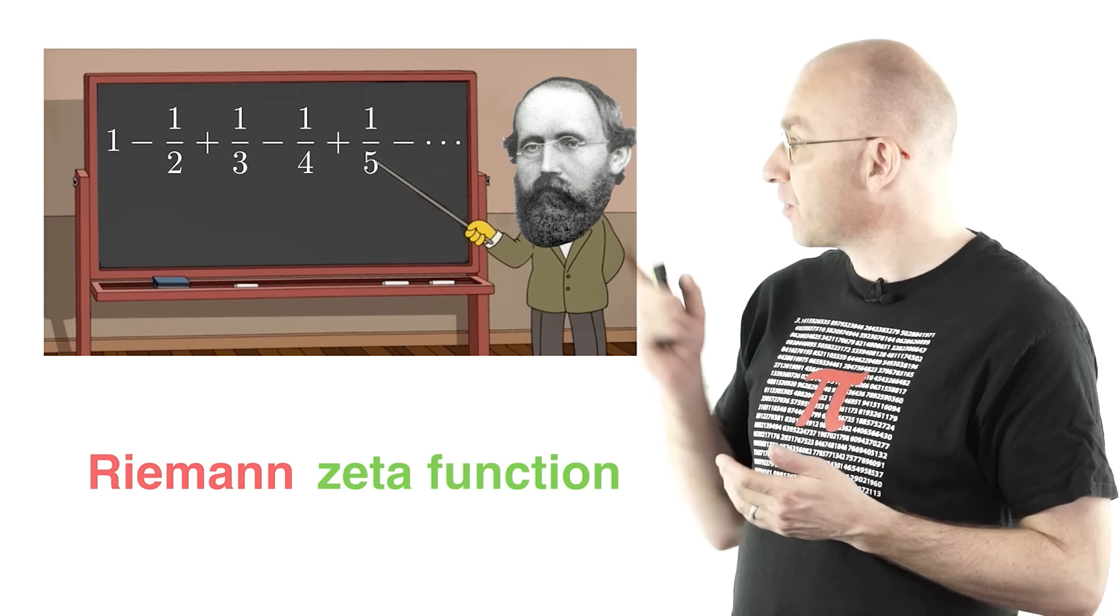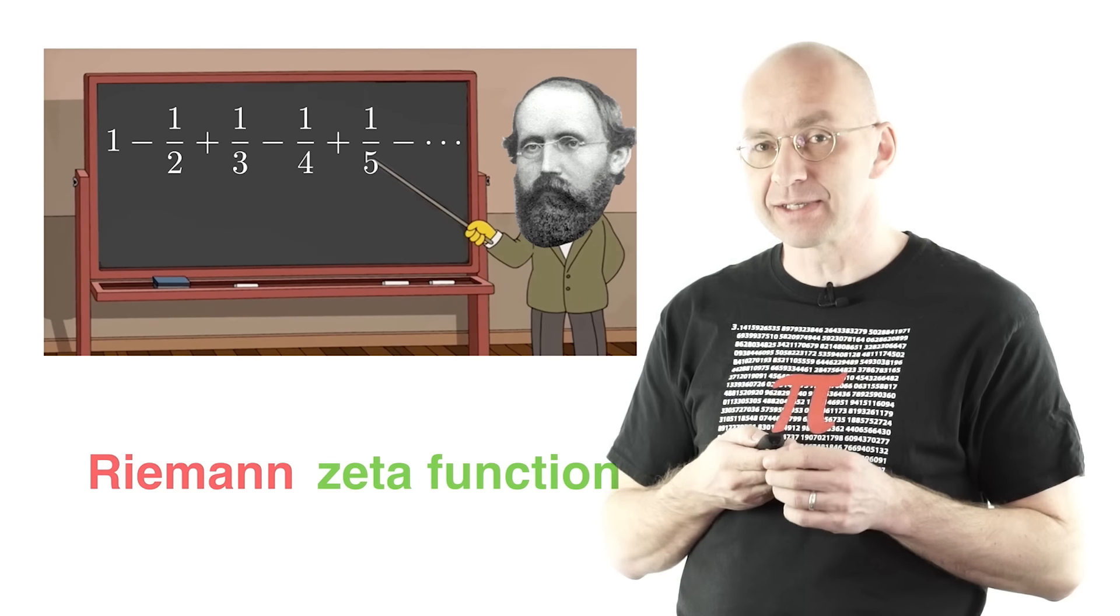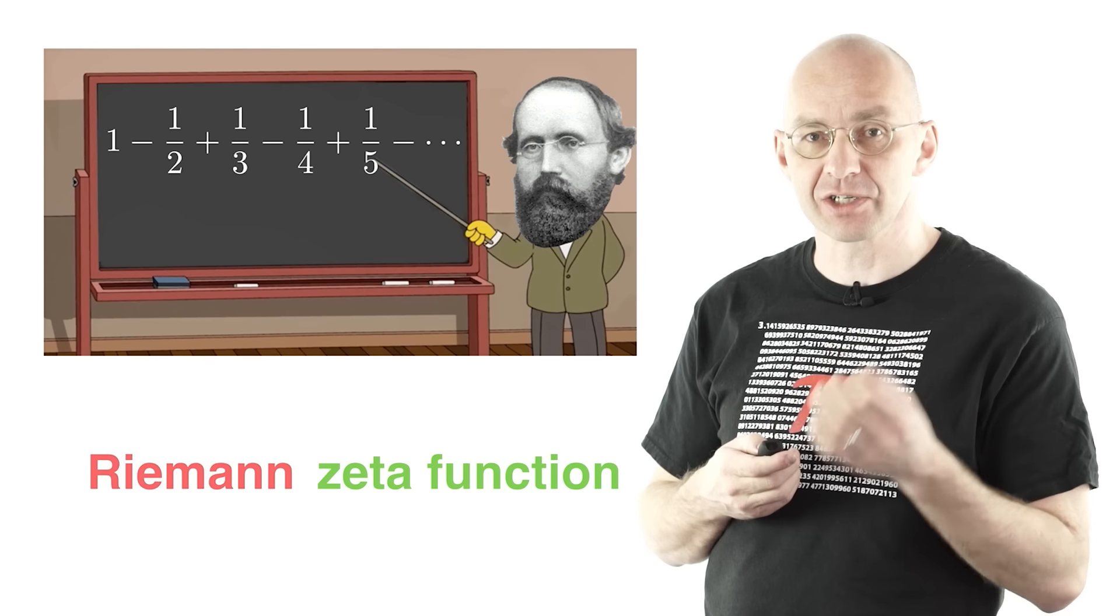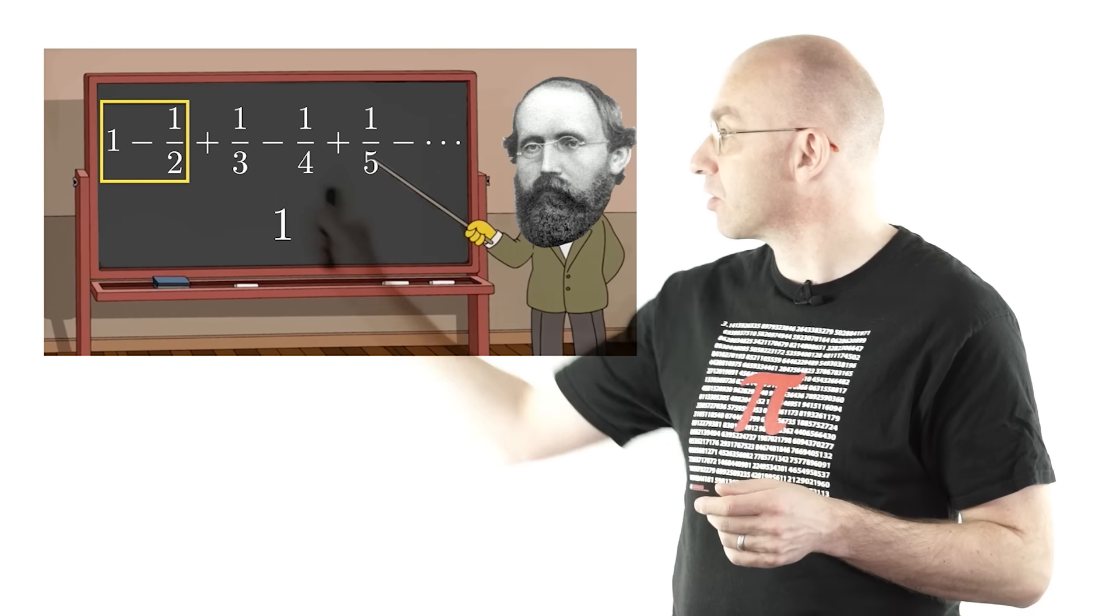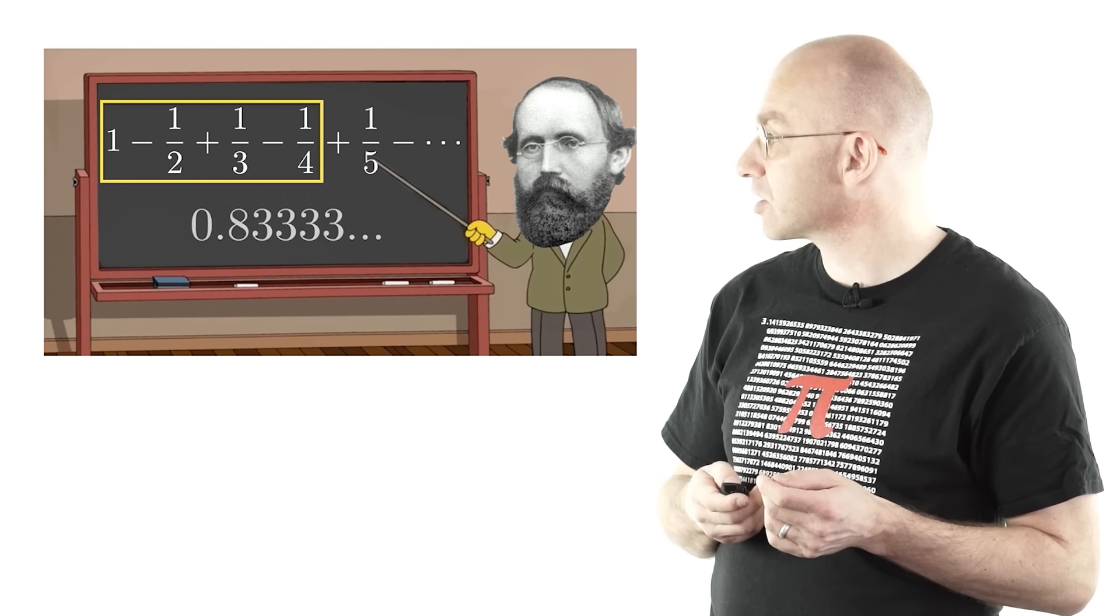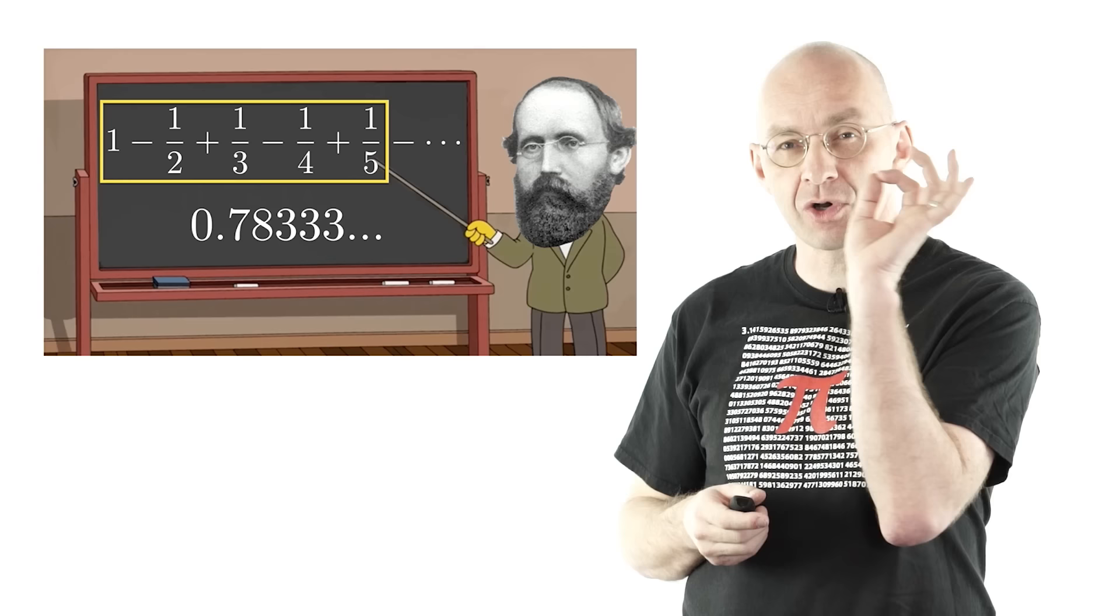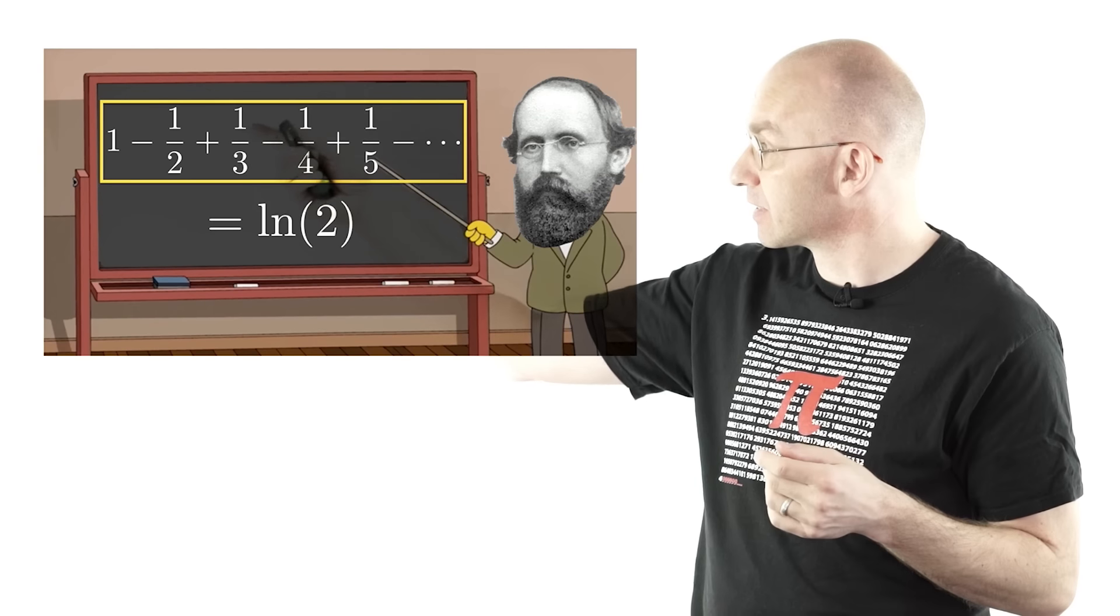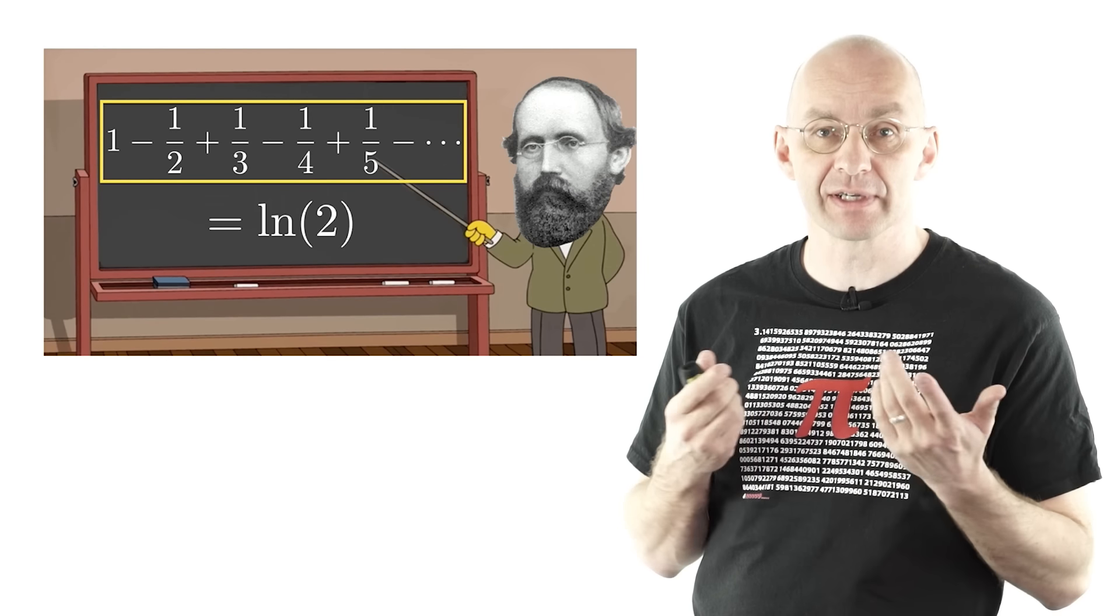But before we do it, I really have to remind you of what it actually means for one of those series to add up to a certain number. So what we do is we translate this series into a sequence of numbers, the partial sums. The first partial sum is just the first term, which is 1. The second partial sum is just those two guys added up, that's 0.5 in this case. Then third partial sum, fourth partial sum. And in the case of this series, the sequence of numbers converges to a certain number, which is log 2. And then we say that this series has sum that number, log 2 in this case. So that's the definition of a sum of an infinite series.